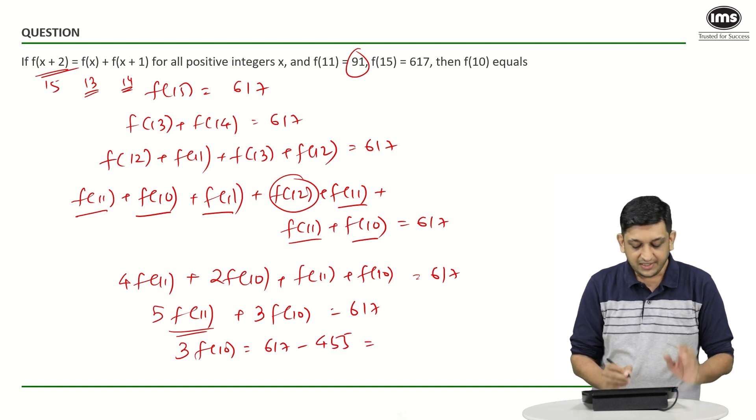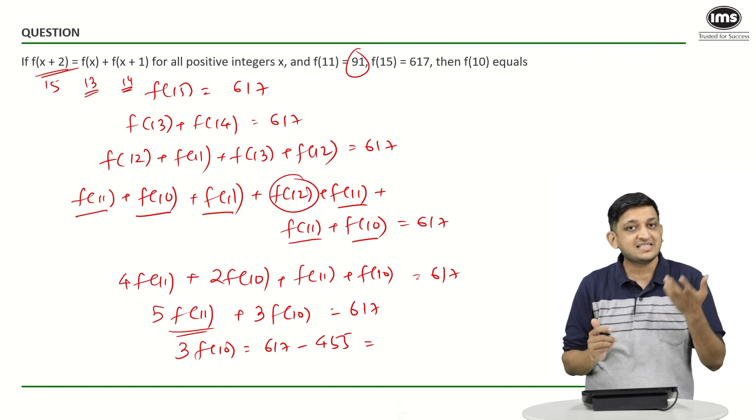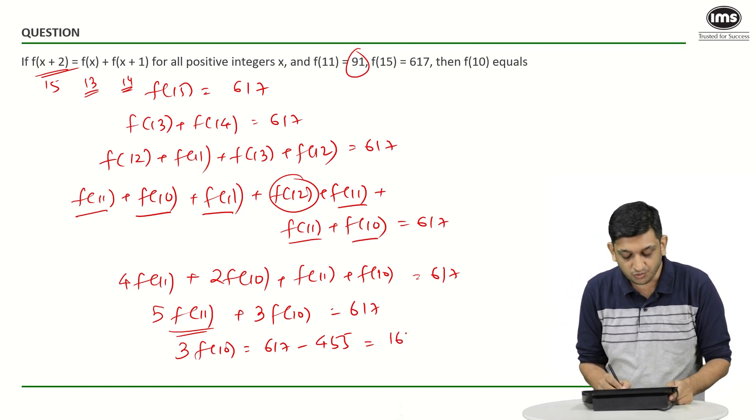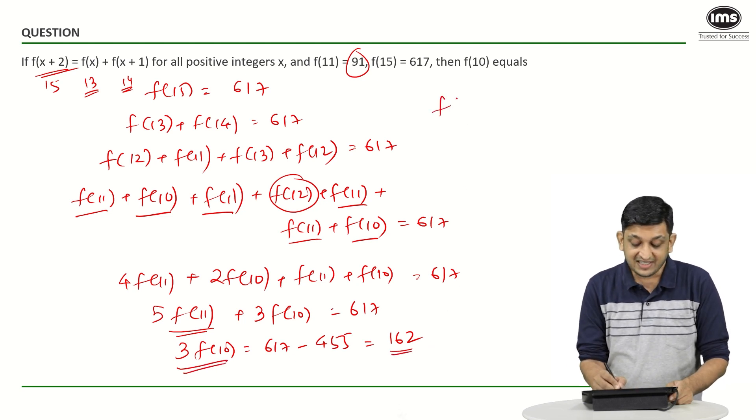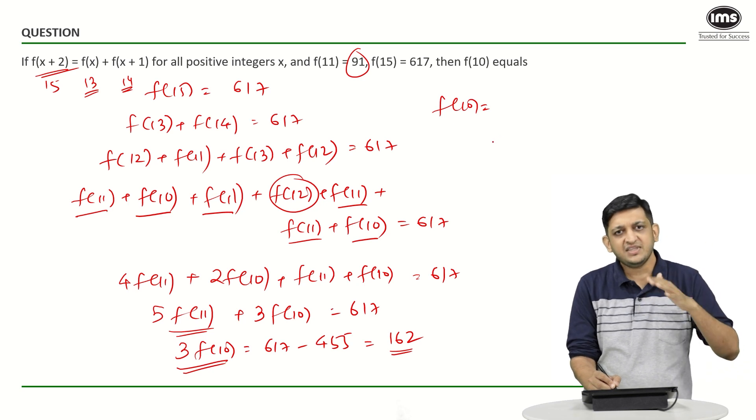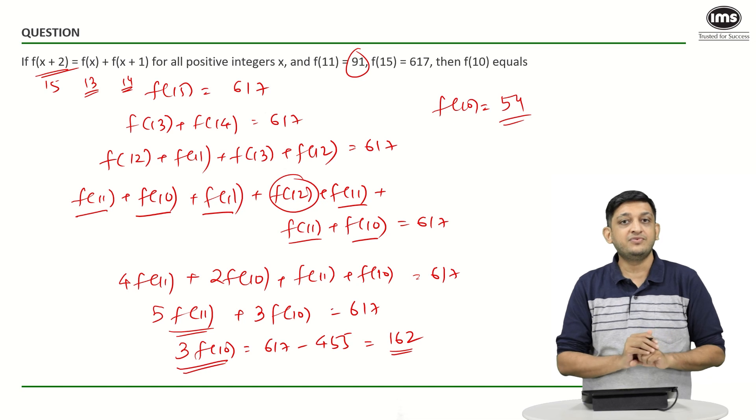So we are going to get 455 plus 145 will be 600, 145 plus 17 will be 162. So 3 times f(10) is 162 or we can say that f(10) will be 162 by 3, 3 fives are 15, 3 fours are 12, our answer is going to be 54. That is the answer to this particular question.